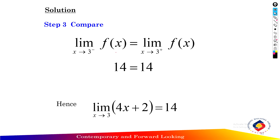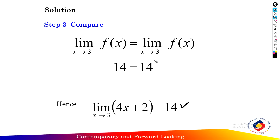Step 3: compare the left-hand limit with the right-hand limit. The left-hand limit exists and equals 14, and the right-hand limit equals 14. The limit approaches the same value from both sides. Conclusion: the limit as x approaches 3 of 4x plus 2 exists and equals 14.